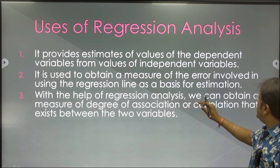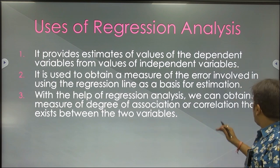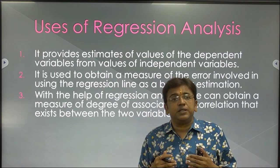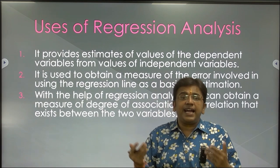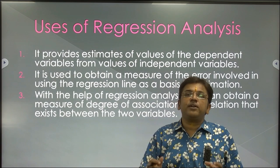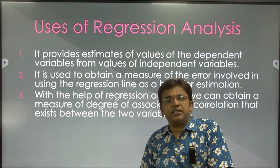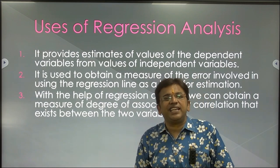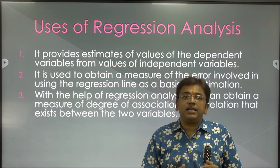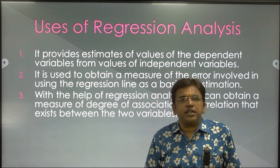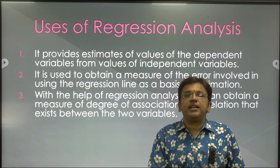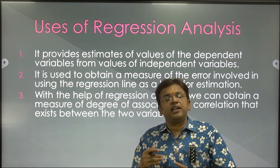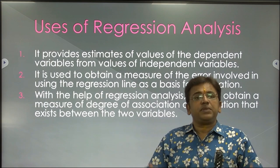Third, with the help of regression analysis we can obtain a measure of the degree of association or correlation that exists between two variables, and measure the cause-and-effect impact. For example, if you are taking a study on rainfall and production of crops, rainfall is an independent variable but production of crops depends upon it. By the help of rainfall data you can predict that a certain amount of rainfall in a year will yield a specific production in that year.